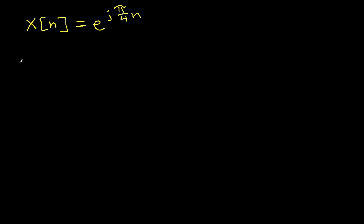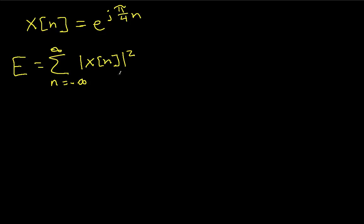In order to find the energy, we need to sum from minus infinity to infinity the magnitude squared of x(n). Now it turns out in this case, this is a complex number, and so the magnitude squared means more than just simply taking x and squaring it. To get the magnitude squared of a complex number, we take x(n) and multiply it by its conjugate, which is usually represented by a star. You get the conjugate by changing the sign of j everywhere it shows up.